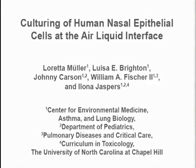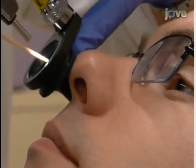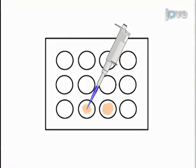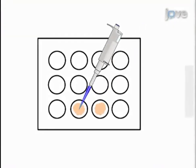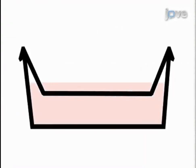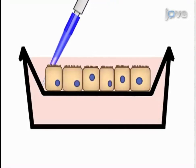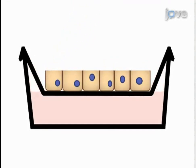The air-liquid interface technique is accomplished by first obtaining superficial nasal epithelial cells from a human volunteer. The second step is to seed the cells on tissue culture plates and then expand the cells in flasks. Next, the expanded cells are seeded into trans-wells and grown to confluency. The final step is to remove the apical tissue culture medium of the confluent cell cultures on the trans-wells to establish air-liquid interface culture conditions.